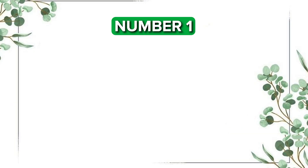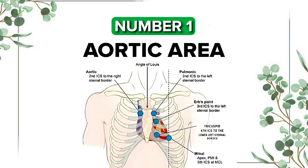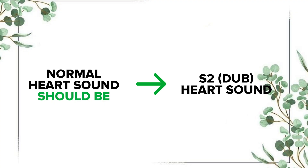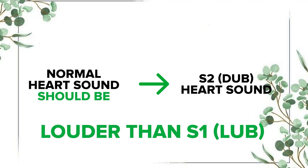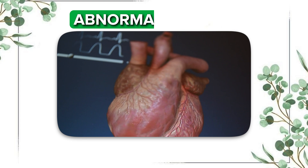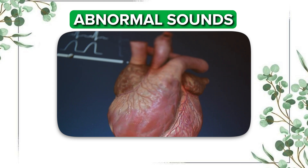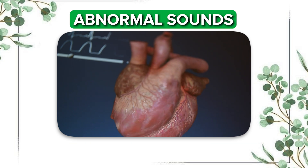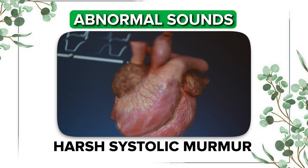Number 1 is the aortic area, which is the second right intercostal space, right sternal border. This is the best place to hear the aortic valve. The normal heart sound here is S2 or 'dub,' which is louder than S1. An abnormal sound here is aortic stenosis, which can cause a harsh systolic murmur.